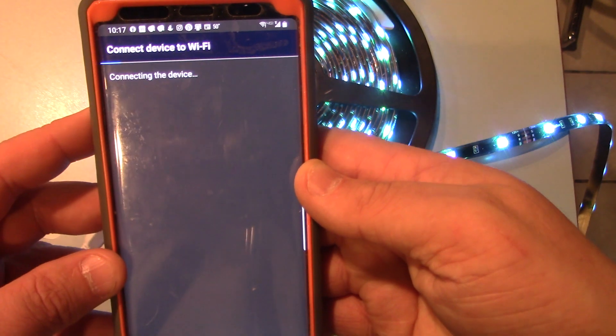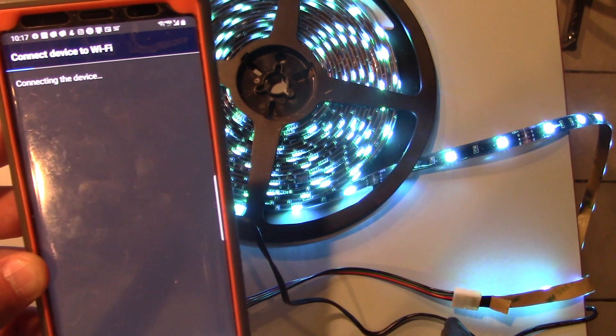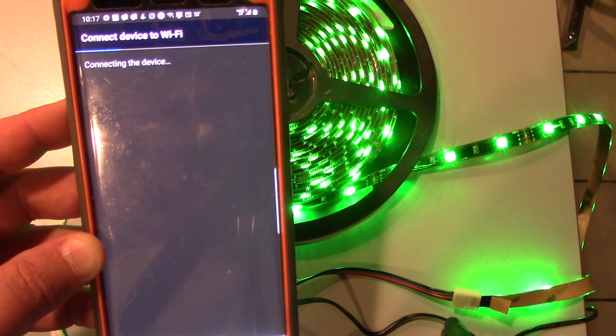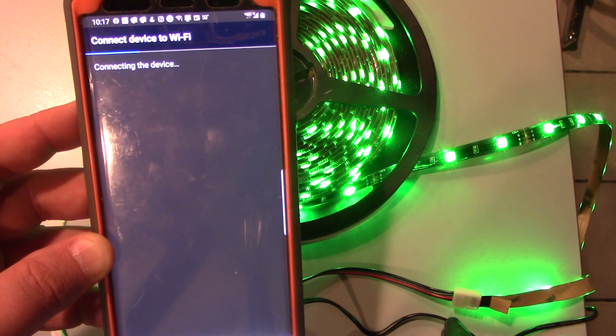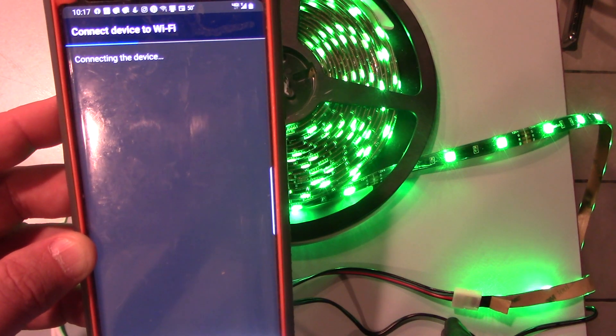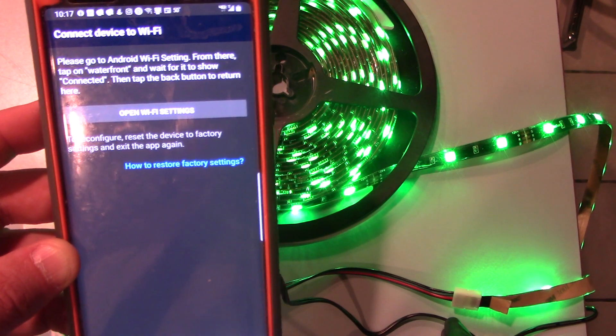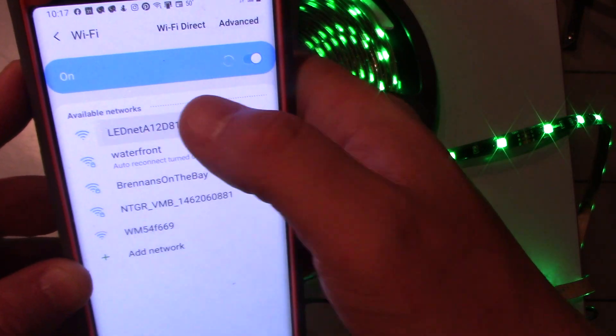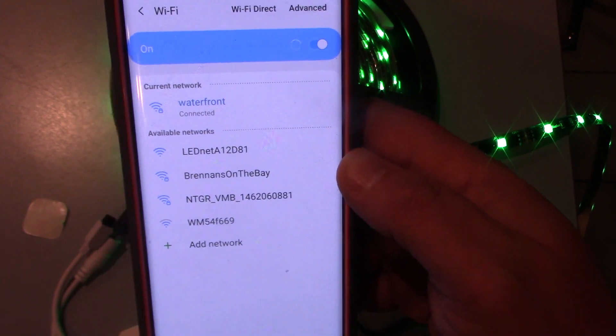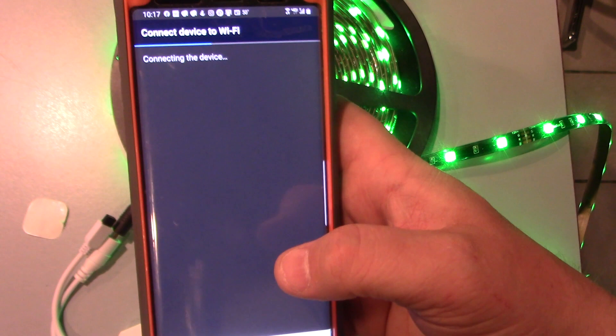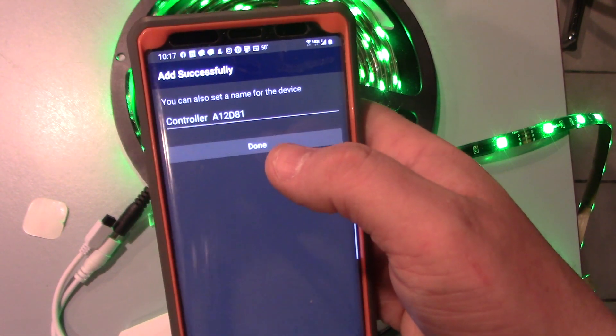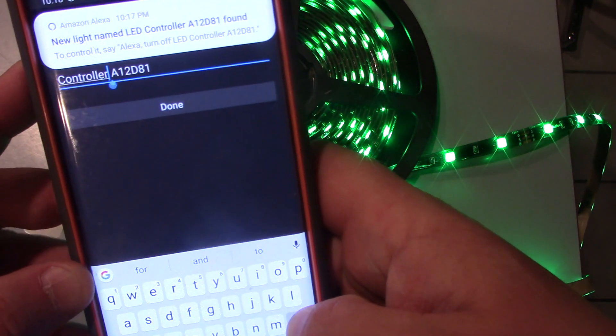So after I put my password in, it's going to connect to the device and you can see the colors changing as we connect to the device. The Wi-Fi is disconnected on my phone. It's connecting to the device, and the cool thing about this is you can add it and set it up in Alexa as well as Google. Open my Wi-Fi and connecting to the device.